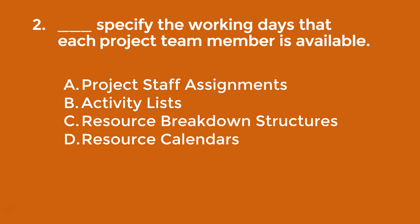Which of the following specifies the working days that each project team member is available? The answer is a resource calendar. Project staff assignments tell us who's assigned to the project, and the resource breakdown structure is just a hierarchy of resource types. Neither actually tells us which working days team members are available — that's where the resource calendar comes in.